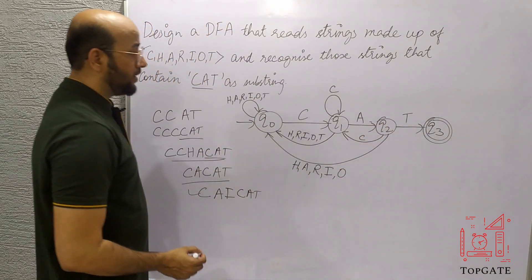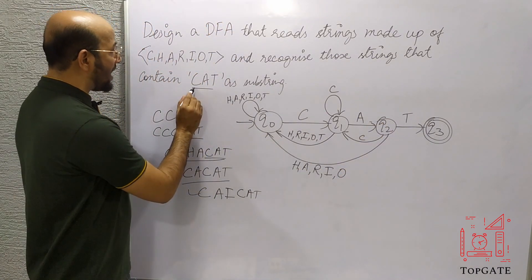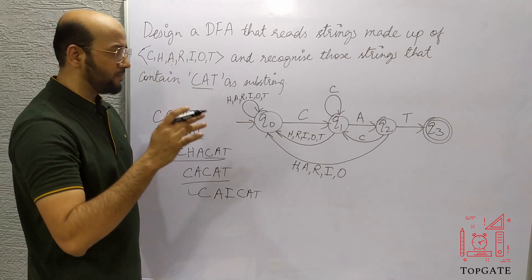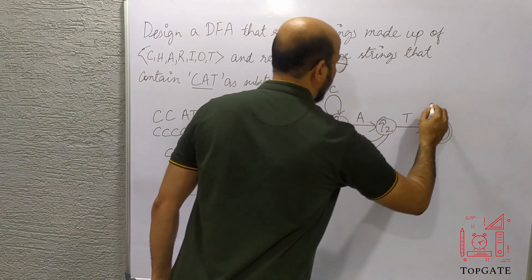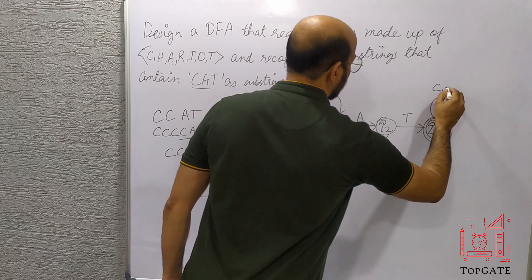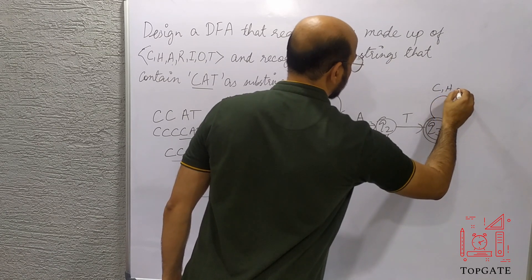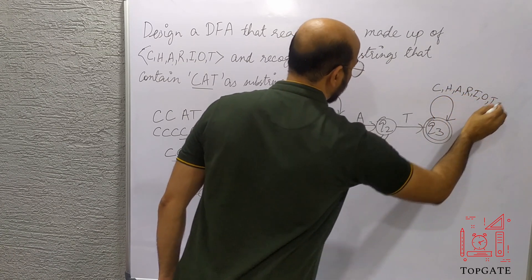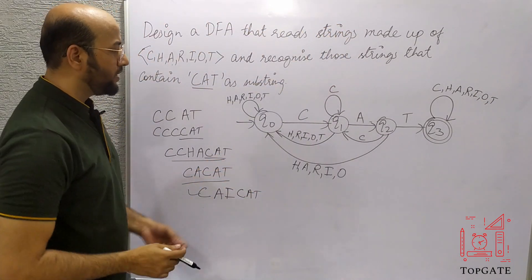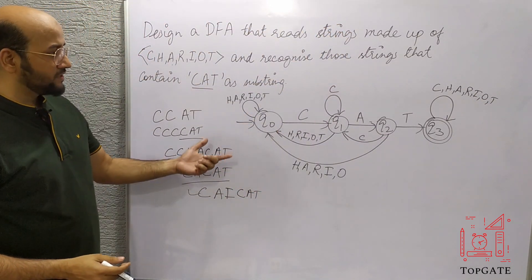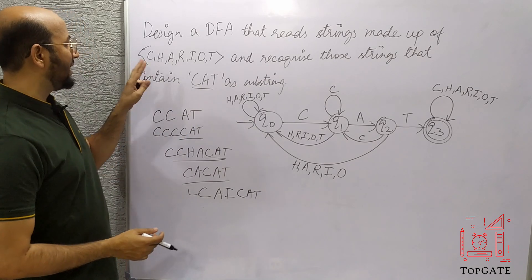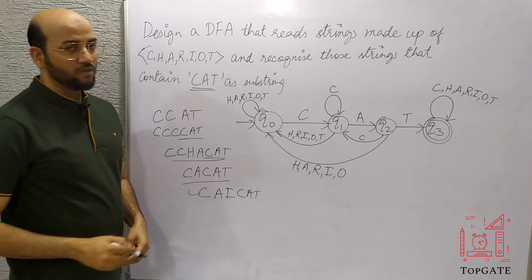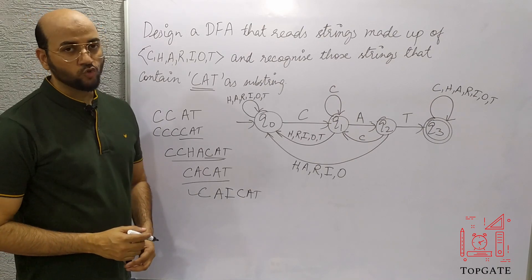Now for Q3: I told you that after 'cat' I can have anything — any combination of the alphabets. So I'll simply add a self-loop on Q3 with all seven characters: C, H, A, R, I, O, T. Q3 is also done. With this DFA we can accept any string made of the letters C, H, A, R, I, O, T that contains 'cat' as a substring. Thank you so much.